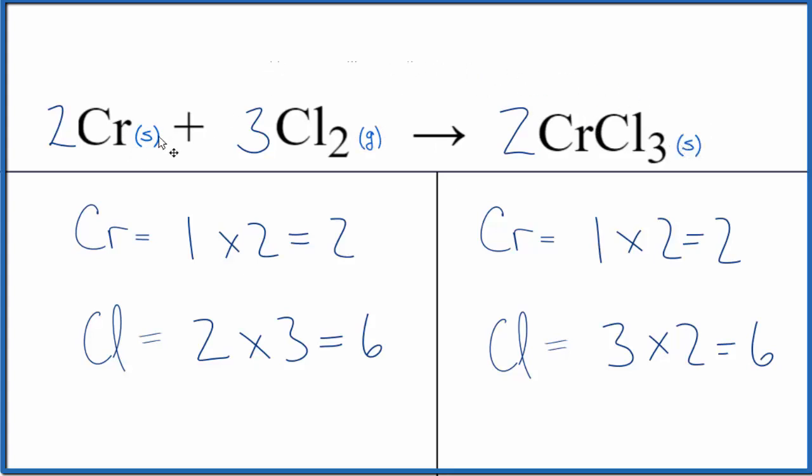The type of reaction here, we have these two things coming together to form one thing. So the type of reaction is going to be combination, also called synthesis. You could say that this was a redox reaction as well because both chromium and chlorine, they change their oxidation states.